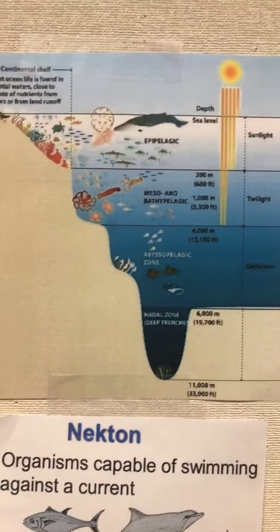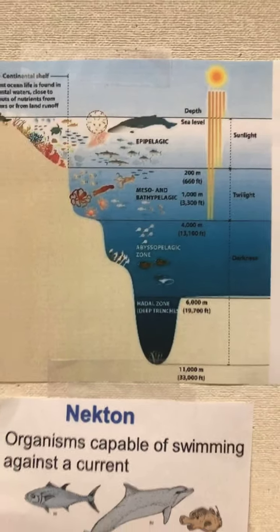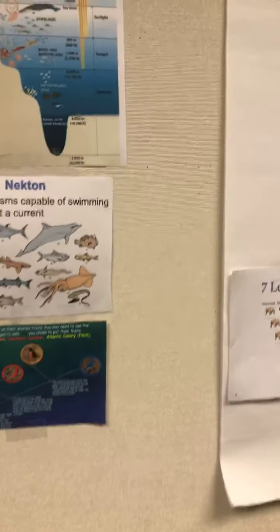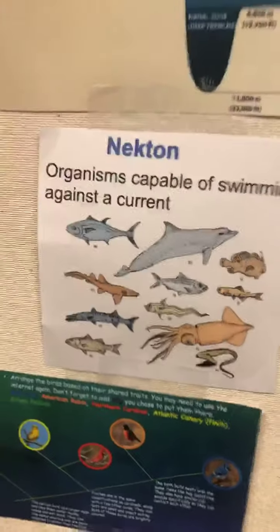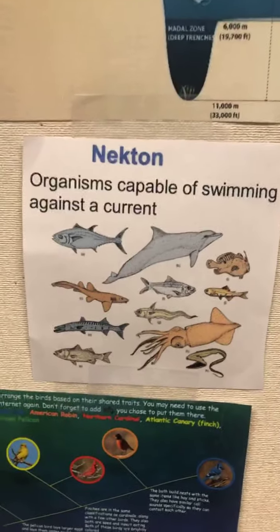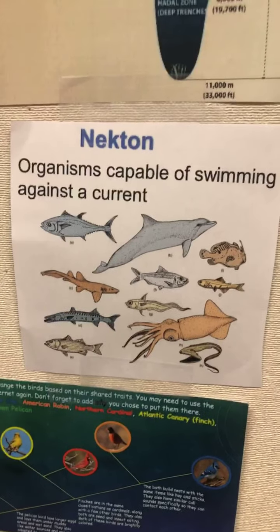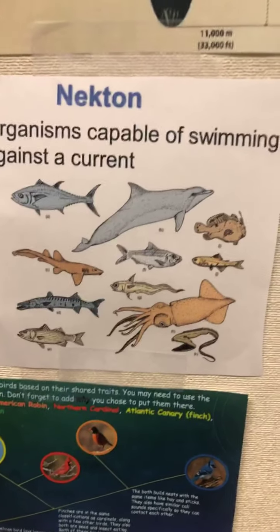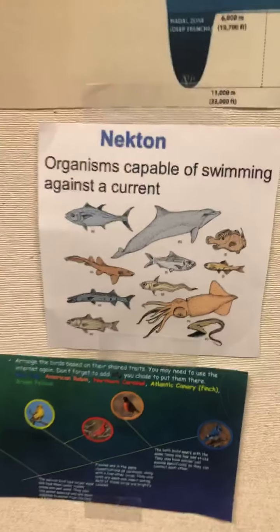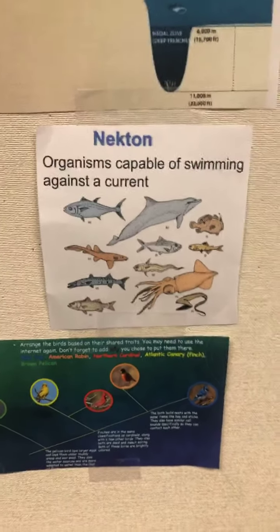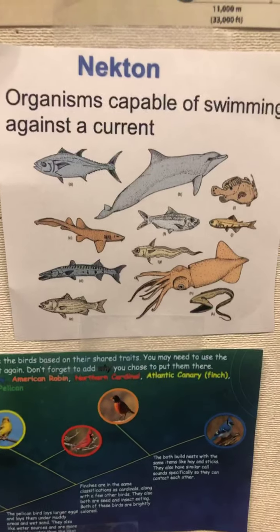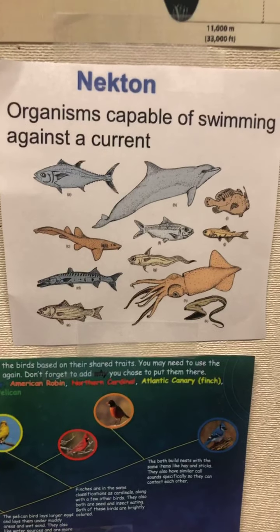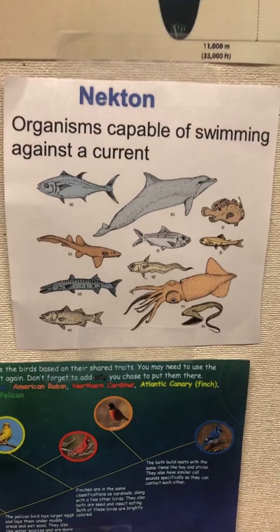You can also make a taxonomy of organisms based on different abilities that they have. This group, Nekton, are organisms capable of swimming against a current. And that matters a lot for animals that live in the water — it means they can move around based on where they want to go instead of just drifting in the water or sitting on the bottom.